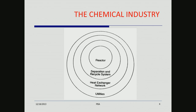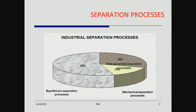The chemical industry basically consists of a reactor usually at the core, a whole lot of separation and recycle systems, heat exchanger networks, and utilities. After the reactor there are separation processes, which can be divided roughly as follows: equilibrium separation processes constitute about 55% of the total, then you have 30% rate-governed separation processes, and mechanical separation processes make up the balance.